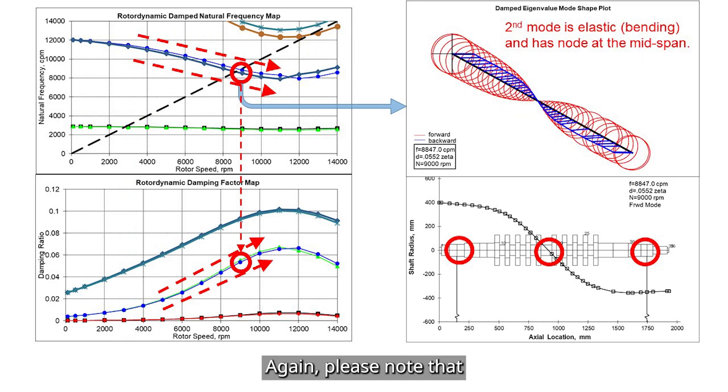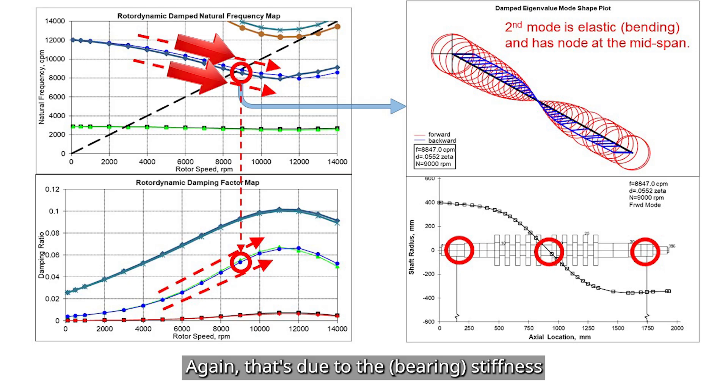We'll go through rotor response analysis in detail later in this video. Again, please note that the natural frequency drops with increasing speed. Again, that's due to the stiffness model we used, where bearing stiffness decreases with speed.